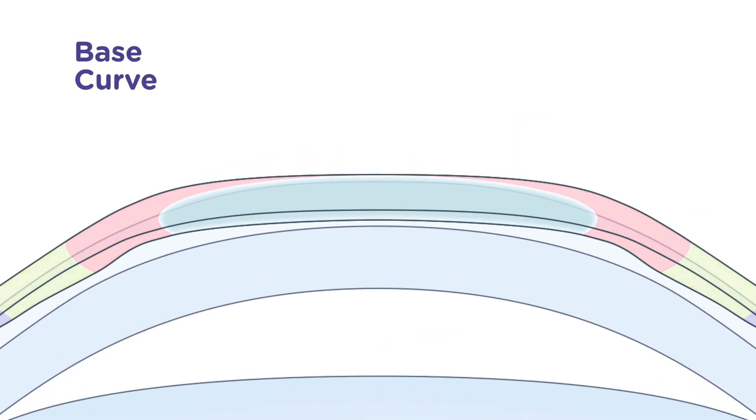The base curve is the shape of the central optical zone and is determined by the wearer's baseline corneal shape and desired refractive error.